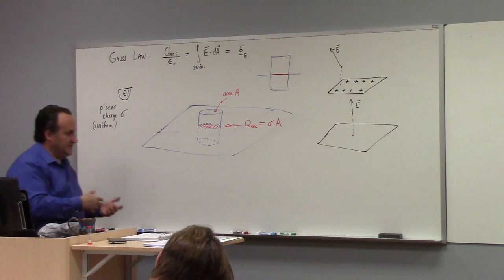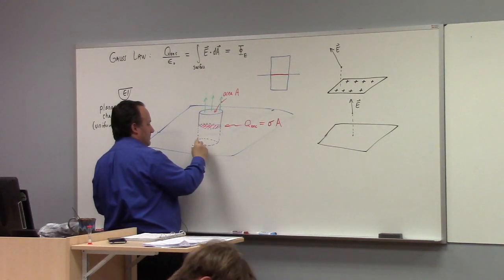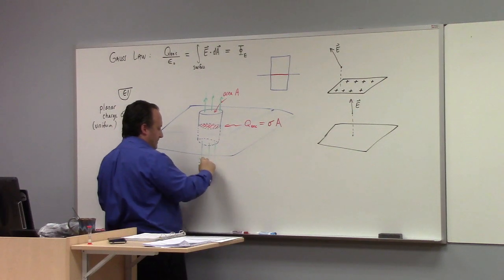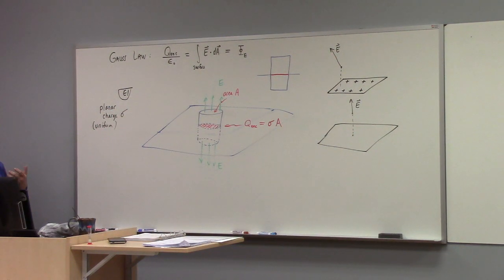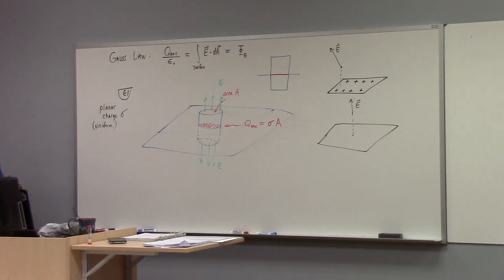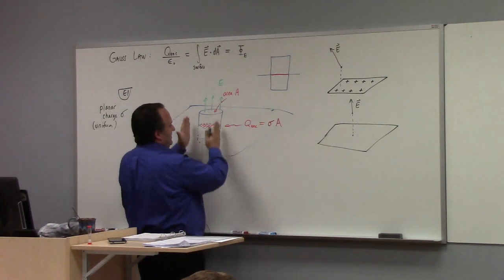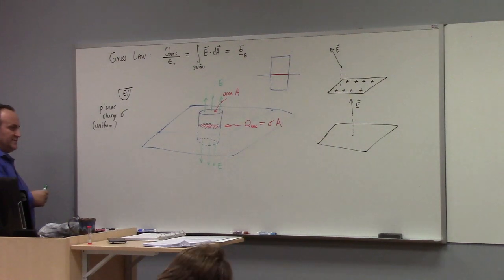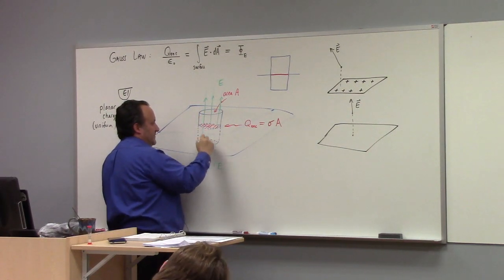Let me draw the electric field lines in green. You've got them coming up through here, but you also have them going down through the base. The flux of the electric field goes out the top of the Gaussian cylinder, and down through the base of the Gaussian cylinder. In both cases it's going in the normal direction — out of the cylinder. But what about the side? The flux through the side of the cylinder is zero, because the field lines are parallel to the sides. They don't cut through the sides.